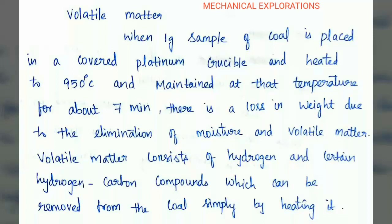Volatile matter: when 1 gram of coal is placed in a covered platinum crucible and heated to 950 degrees Celsius and maintained at that temperature for about 7 minutes, there is a loss in weight due to the elimination of moisture and volatile matter. Volatile matter consists of hydrogen and certain hydrocarbon compounds which can be removed from the coal simply by heating it. This is known as the volatile matter present in the coal.